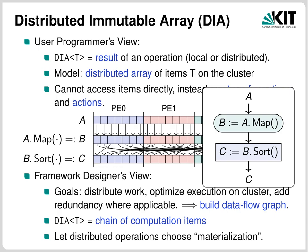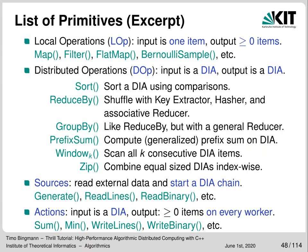Why have a distributed array and not a distributed set? There are two basic types of operations: local operations (LOPs) — which cannot perform communication, such as Map, Filter, FlatMap and Bernoulli sample — and distributed operations (DOPs), which can communicate and contain at least one BSP model barrier. There is also a third kind of auxiliary DIA operations used to change and augment the DIA graph. DOPs include sort, ReduceByKey, prefix sum, zip, union and many others. Each DOP is implemented as a C++ template class that runs a distributed algorithm on a stream of input items.